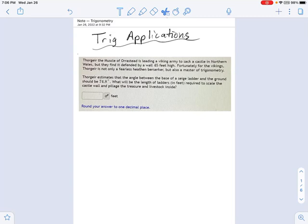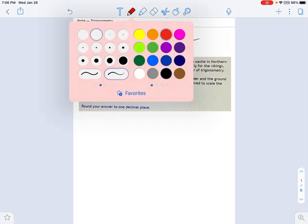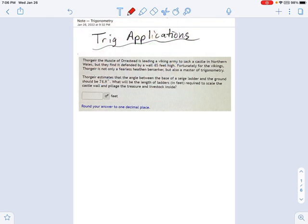In this video, I'm going to go over two story problem trig applications, and what makes these different from the videos I've done before is I'm not giving you a triangle at the beginning of the problem. It's up to you to draw the triangle based on information in this little paragraph here.